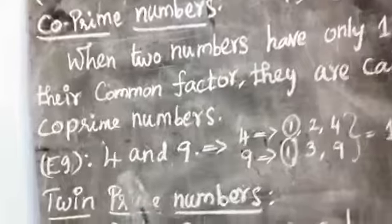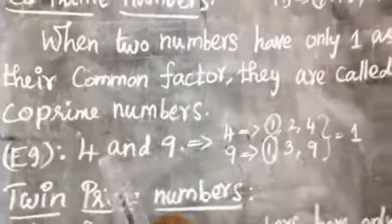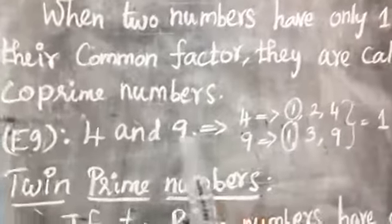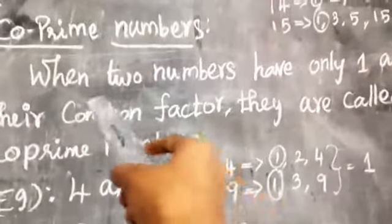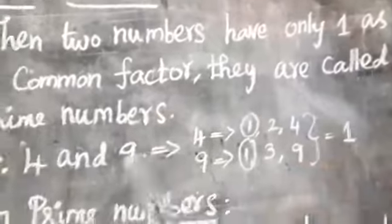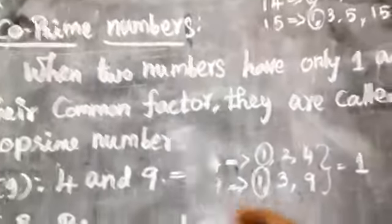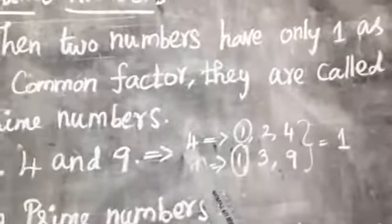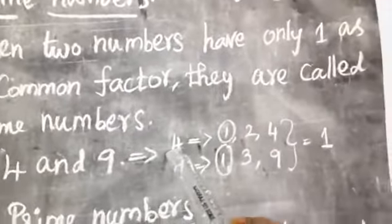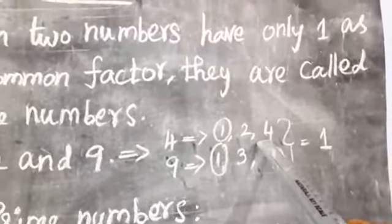Now look at the example: 4 and 9. I have taken two numbers. The factors of 4 are 1, 2, 4.